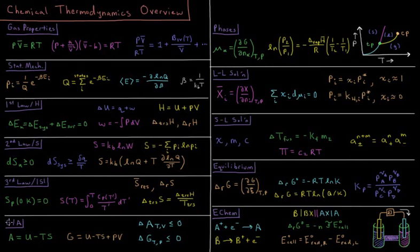Our next chapter is on Gibbs energy and Helmholtz energy. Helmholtz energy A is defined as the internal energy minus temperature times entropy, whereas the Gibbs energy is the internal energy minus temperature times entropy plus pressure times volume. These are important because the Helmholtz energy must be less than or equal to zero for the system during any process at constant temperature and volume, whereas the Gibbs energy for a system must be less than or equal to zero for any process that occurs at constant temperature or pressure.